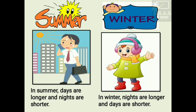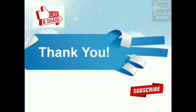We can observe that the 24 hours of the day are divided into a 12-hour day and a 12-hour night on 21st March and 22nd September. From December to June, the day gets longer, while from June to December, the day gets shorter. I hope you have understood the lesson and enjoyed watching the video. Thank you for watching. Please like, share, and subscribe to my channel and stay tuned for more videos. Bye-bye!